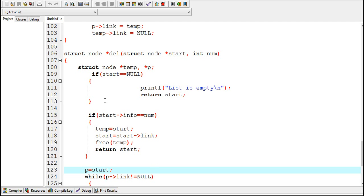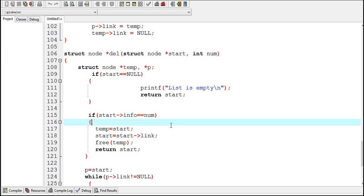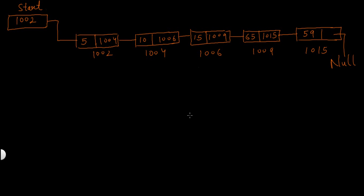Hello guys. In my previous video I created the del function to delete nodes from a linked list. In this video I am going to show you how to search for a node in a linked list. Searching means: suppose the user enters 15 as the number to be searched, then searching will begin from the first node in sequence. If the number is found, a message should print 'number found in the list'; if not found, 'number not found in the list'.